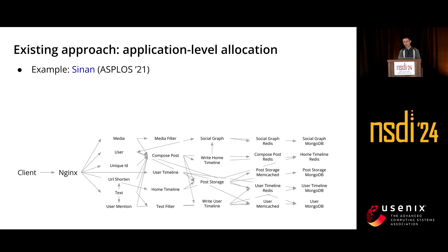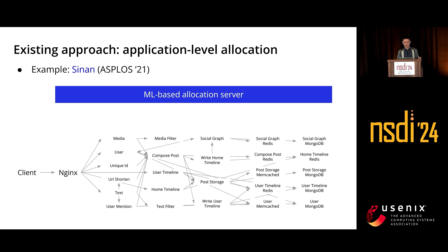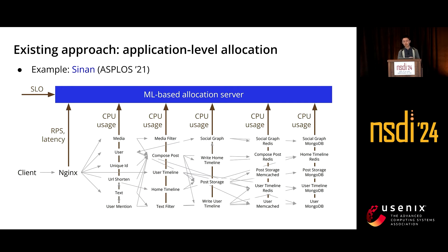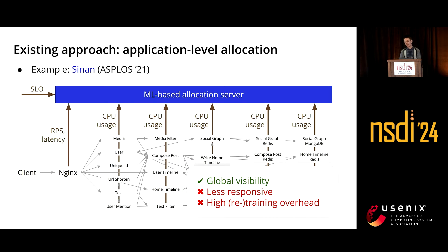Another existing approach is to manage resource allocation at the application level. An example is Sunan. It runs a machine learning-based allocation server for the entire application, so it knows the SLO, RPS, and latency information from the gateway, and it collects every service's CPU usage to learn relationships between services. This global visibility is great, but collecting data from every service introduces delays, making it less responsive to workload changes. Also, its machine learning model requires collecting training data from the production system, which is unsafe and costly. Every time a new service is added or dependencies change, the model may need to be retrained, so the overhead is very high.